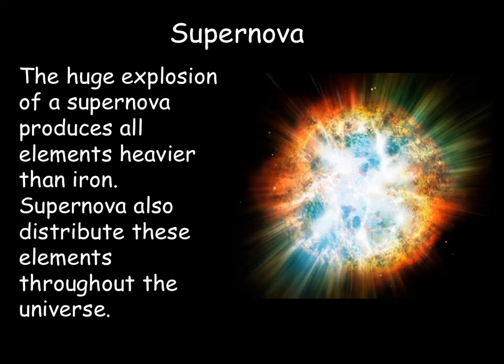A supernova is a huge explosion at the end of a red supergiant's life, and it produces all the elements heavier than iron. Importantly, a supernova then distributes all those elements throughout the universe. The fact that the Earth contains elements heavier than iron is proof that the Earth was once part of a large red supergiant star that went supernova, because the only way we could have elements heavier than iron on Earth — such as gold — is to have been part of a supernova at some point.